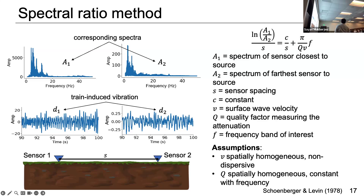We are making some simplistic assumptions: the medium is laterally homogeneous and non-dispersive — specifically, I have chosen a very small frequency band, which makes the non-dispersive assumption more reasonable. Q is also assumed to be spatially homogeneous and constant within the small frequency range we are choosing.